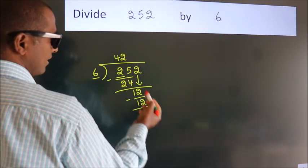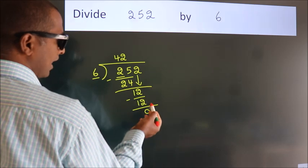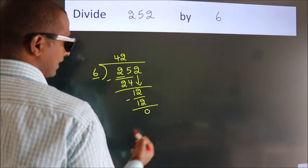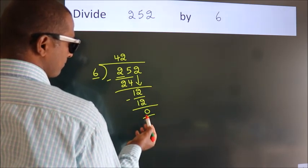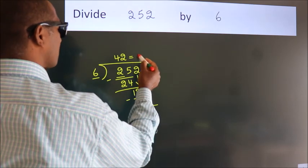After this, no more numbers to bring it down. And we got remainder 0. So, this is our quotient.